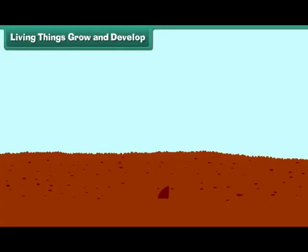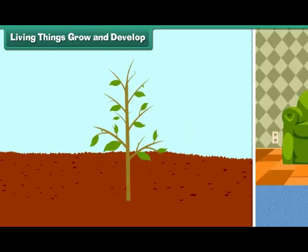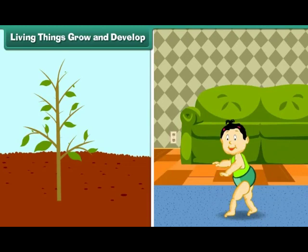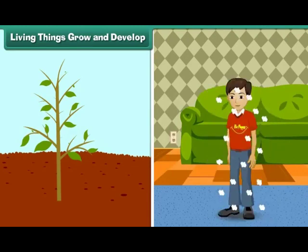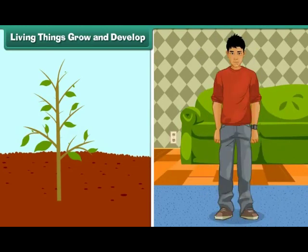Living things grow and develop. All organisms grow and develop. Growth results in an increase in size, weight, and synthesis of new protoplasm. In animals, growth is limited to a certain age, while plants grow throughout their entire life.